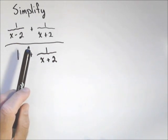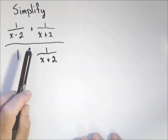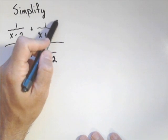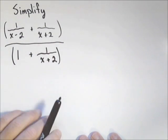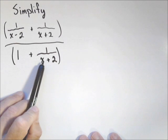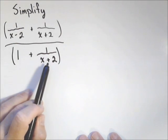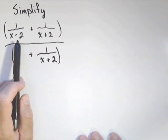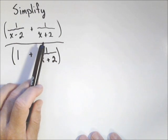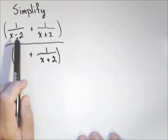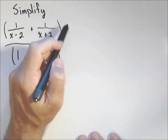What we want, one good way of approaching this is to right away find the least common denominator of those fractions on top and bottom. And on bottom, the least common denominator is just x plus two. On top, it's x minus two times x plus two. So the least common denominator of both is x minus two times x plus two.